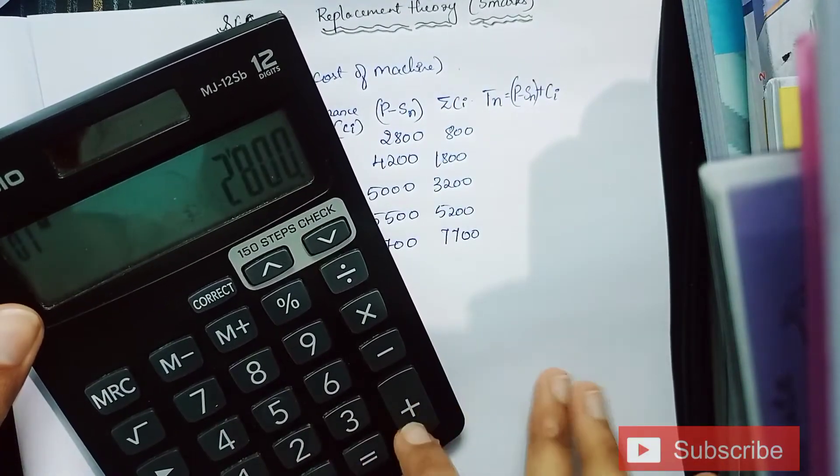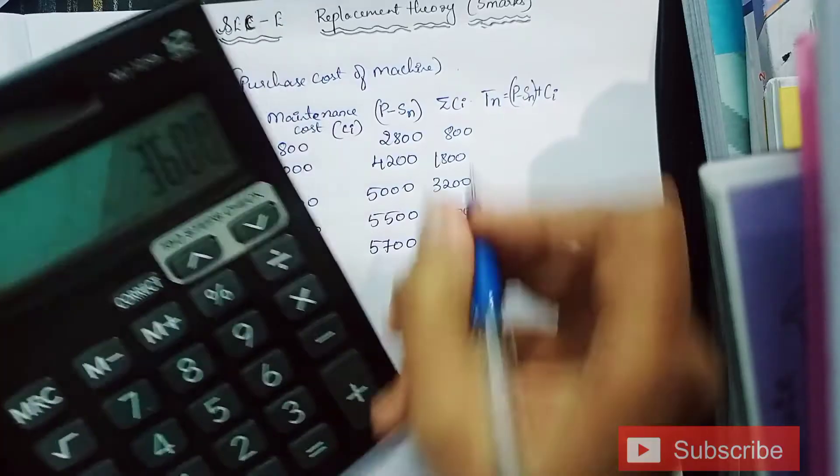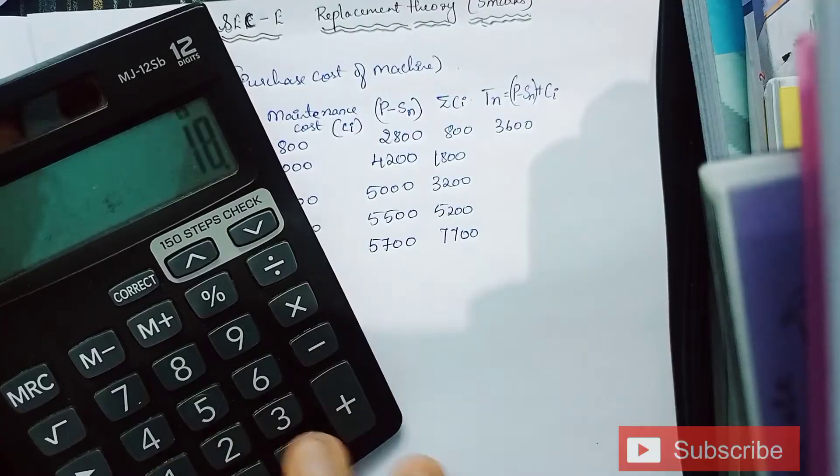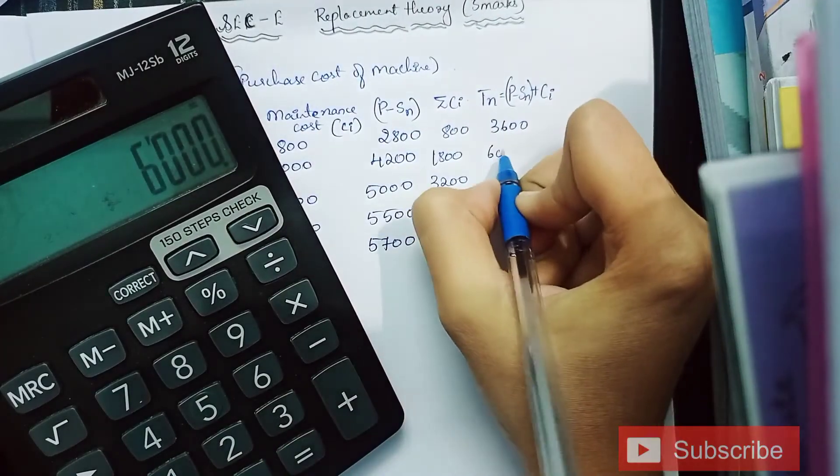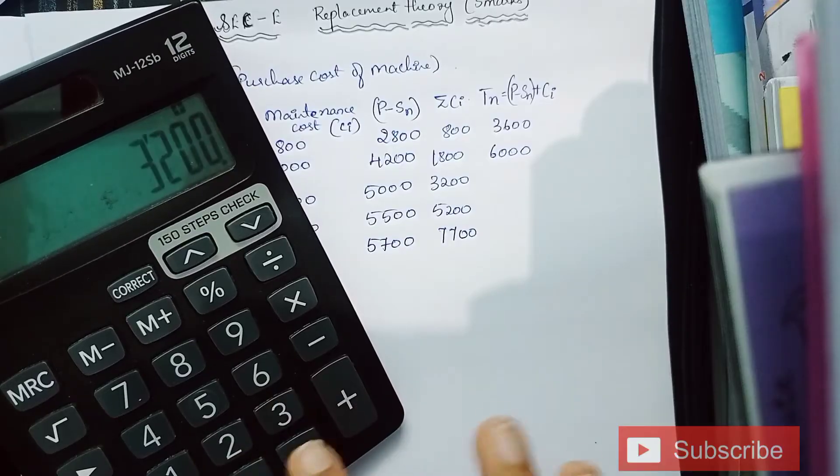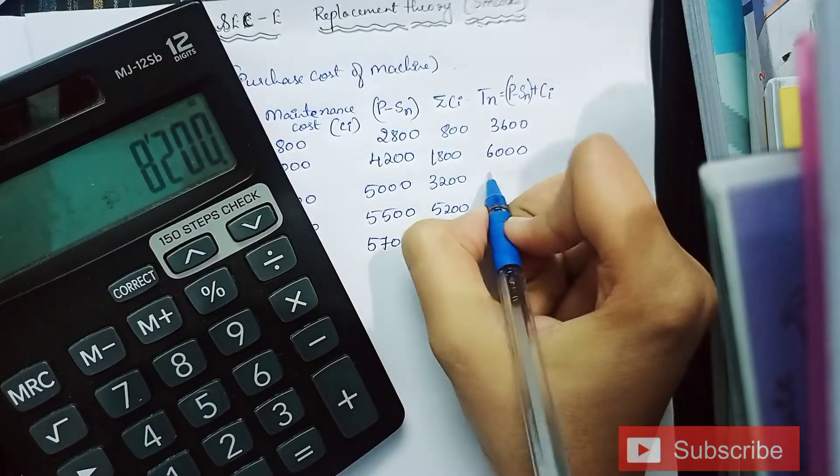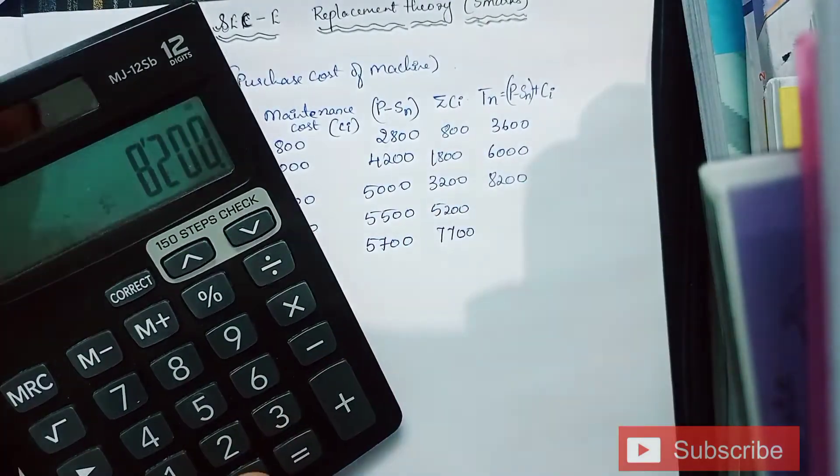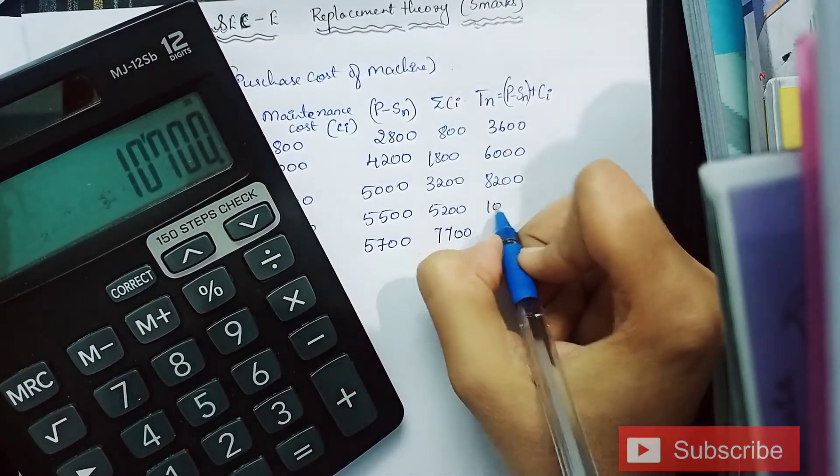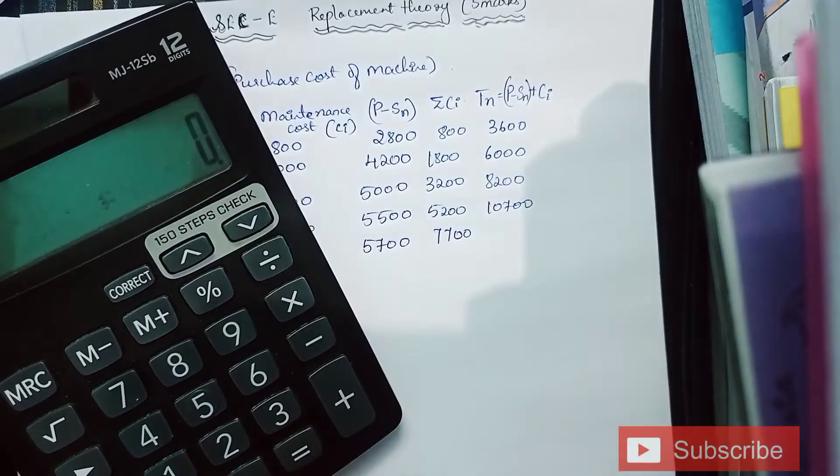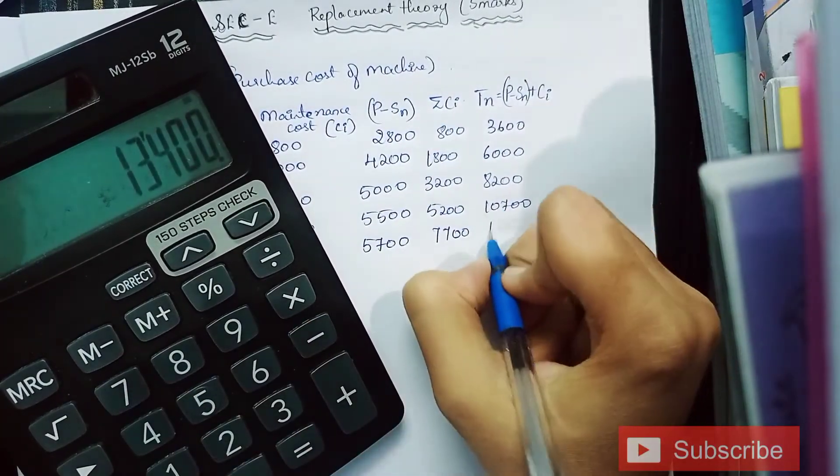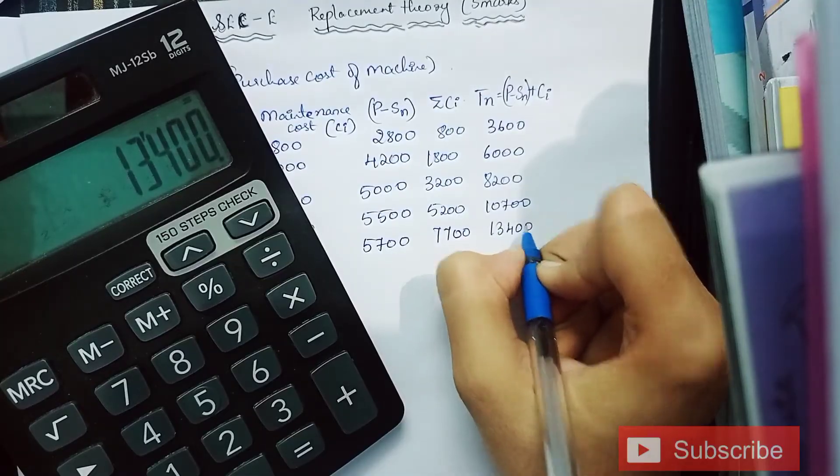2800 plus 800 is 3600. 4200 plus 1800 is 6000. 5000 plus 3200 is 8200. 5500 plus 5200 is 10,700. Lastly, 5700 plus 7700 is 13,400.